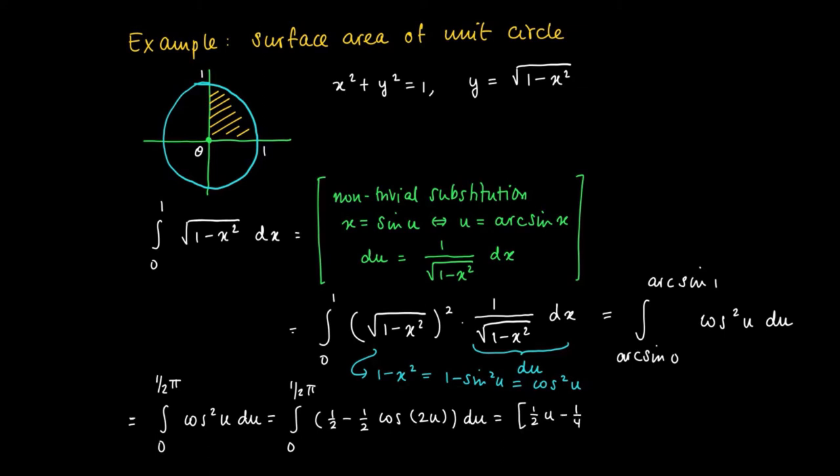It's not hard to find a primitive of this function. So we get 0 to a half pi of a half times u, which is a primitive of a half, and minus 1 over 4 the sine of 2u, which is a primitive of minus a half cosine 2u. If you perform the necessary calculations, you will find that the integral equals 1 over 4 pi.